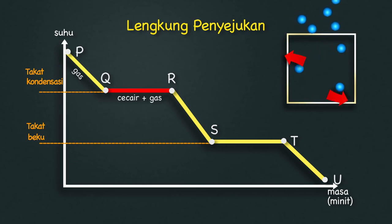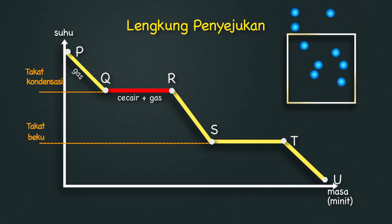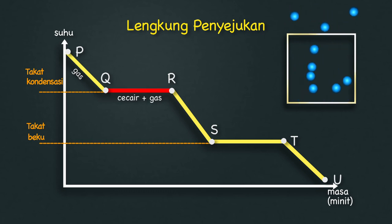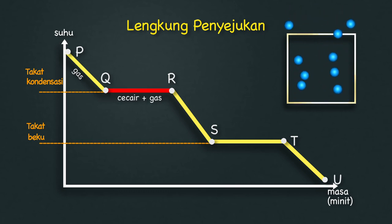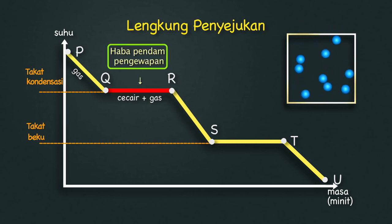QR — Haba dibebaskan untuk menguatkan ikatan antara molekul. Tenaga kinetik tidak berkurang, maka suhu tidak berubah. Fasa cecair ke gas dikenali sebagai haba pendam pengawapan.